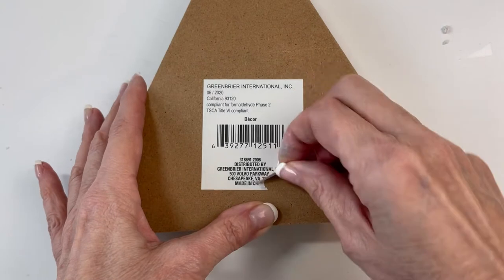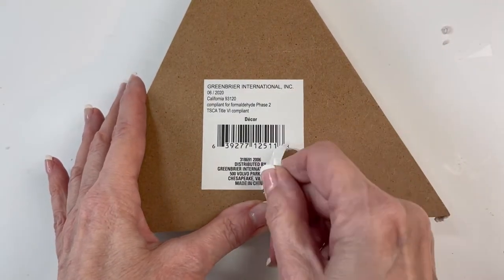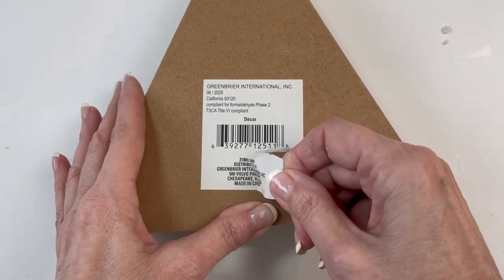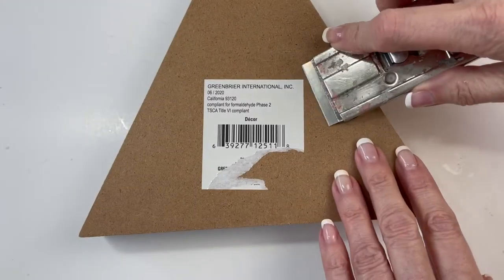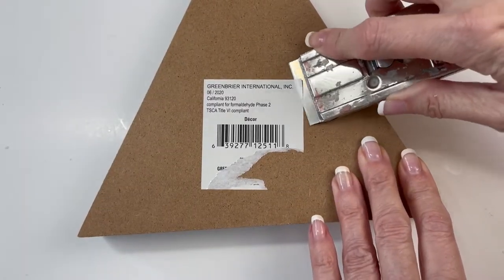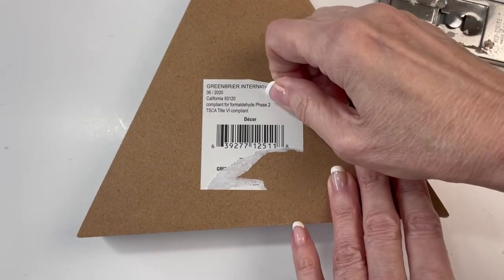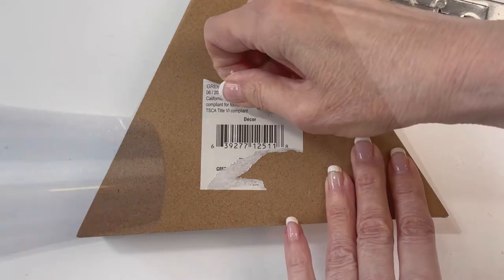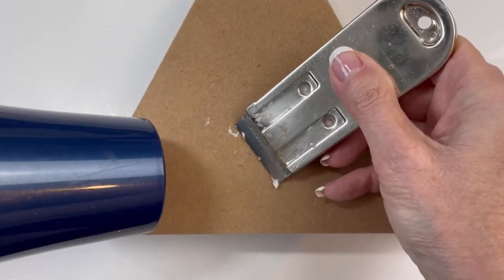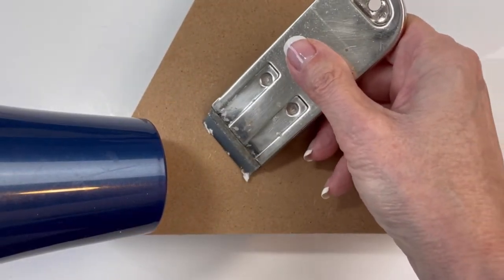Remove the label from the back of both frames. I had trouble getting this sticker off, so I used a razor blade scraper and a blow dryer to remove the rest of the glue.